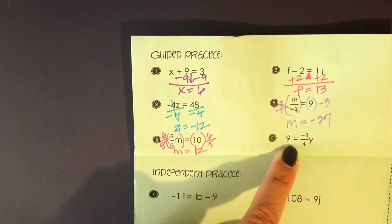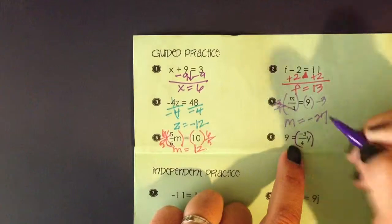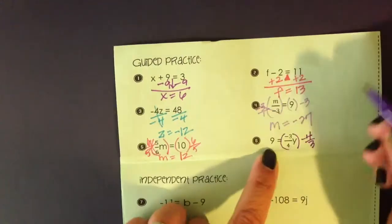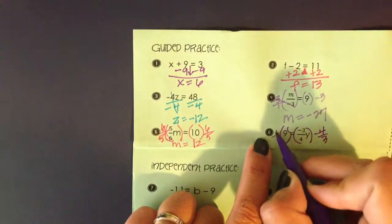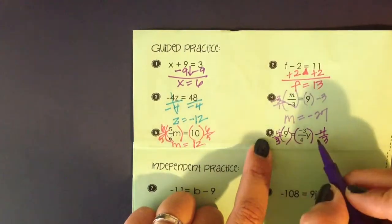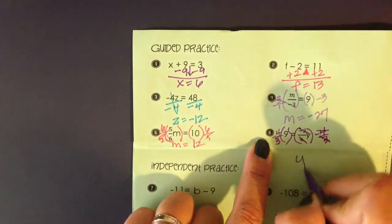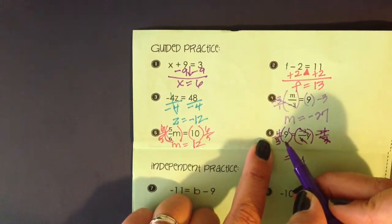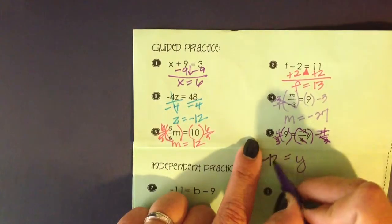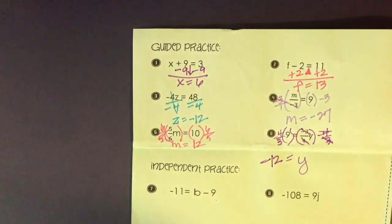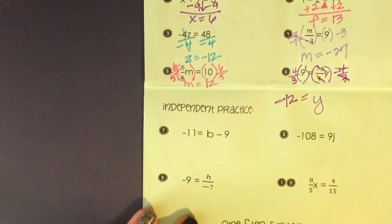Number 6, same idea. I've got negative 3 fourths as the coefficient of y, so I'm going to multiply both sides by negative 4 thirds. When we take reciprocals, we just keep the negative sign involved. Those cancel out. Negative 4 times 9 gives me negative 36, and if I divide negative 36 by 3, I get negative 12. At this point, stop the video and go on to the independent practice.